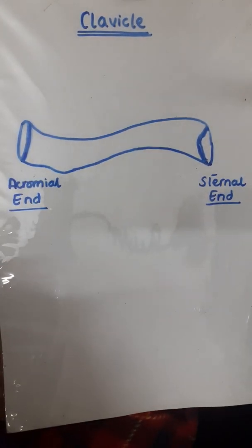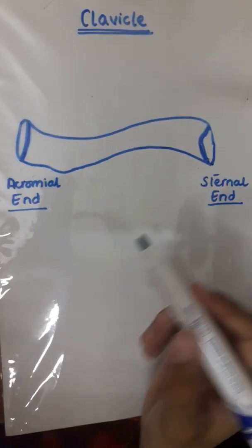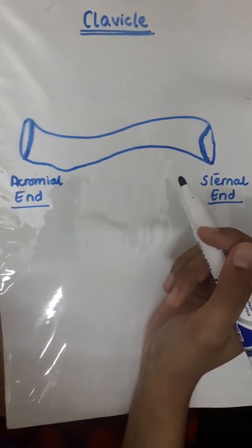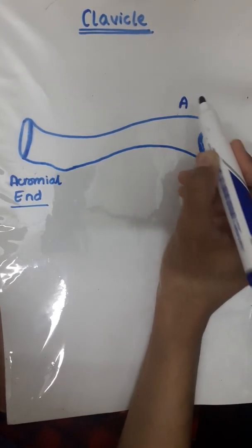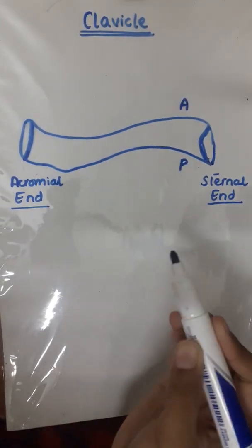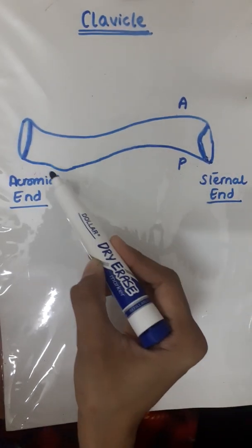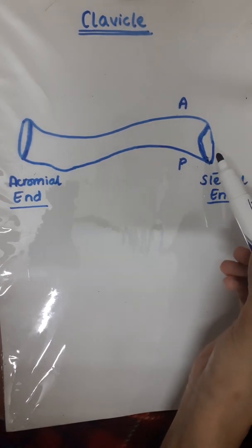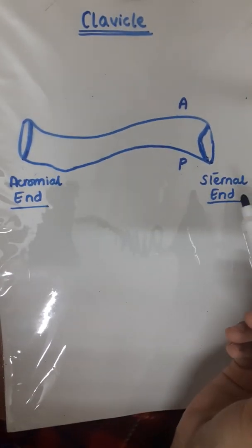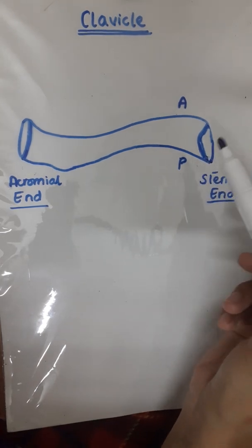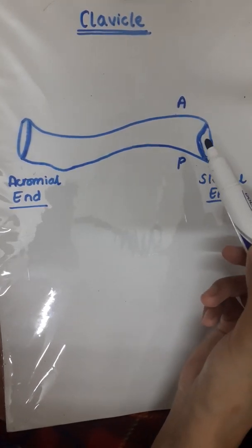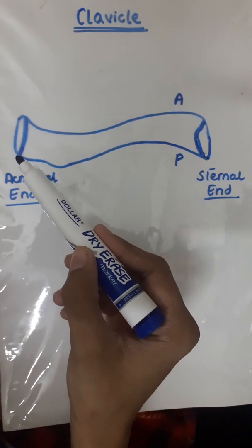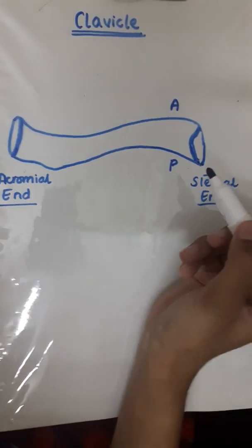In this video we'll be discussing the important muscles and ligament attachments to the clavicle. This is the sternal end and this is the acromial end. The clavicle has two borders — the anterior border and the posterior border — and two surfaces: the superior surface and the inferior surface. The sternal extremity is blunt and thickened, articulating with the clavicular notch of the sternum, while the acromial extremity is somewhat flattened and located laterally.